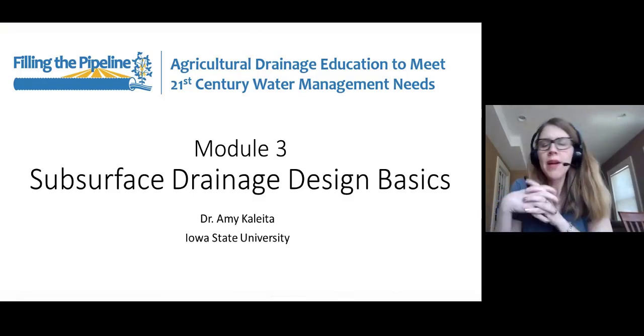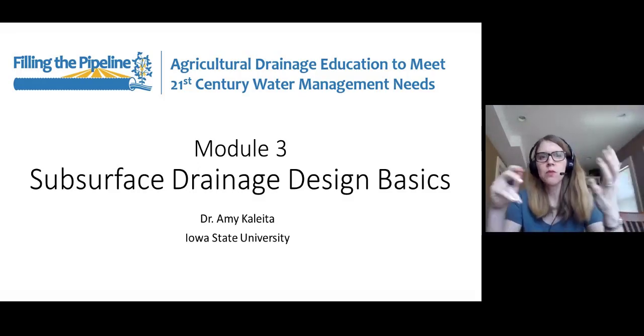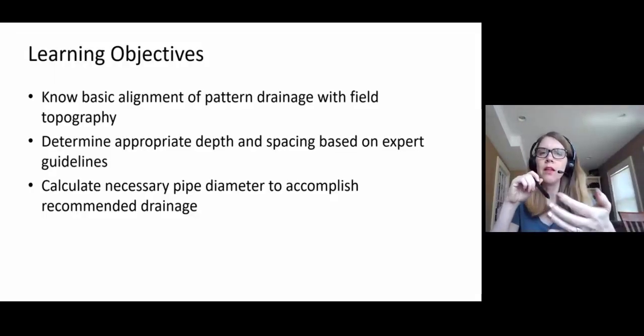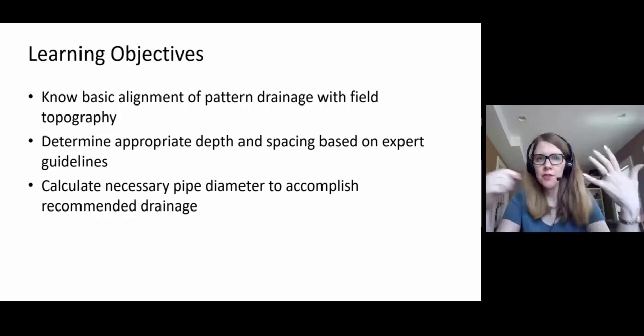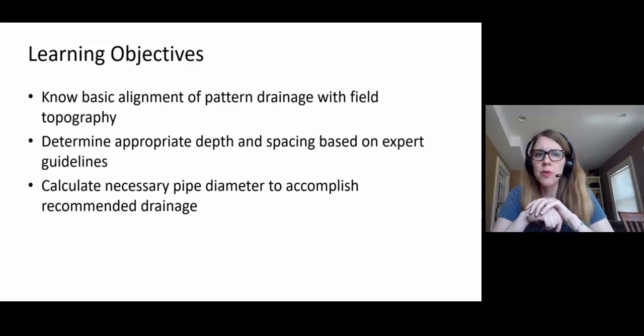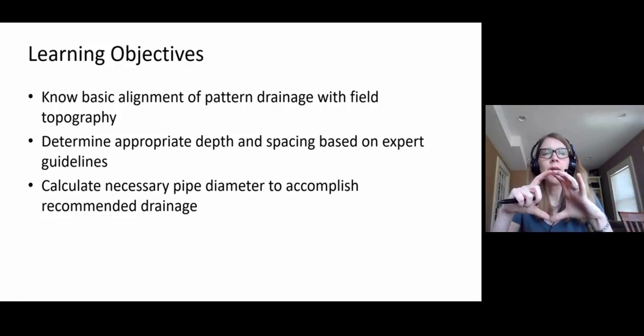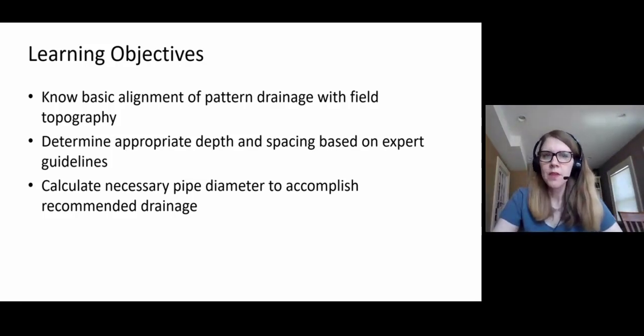All righty. Today we're following up on our conversation about drainage by getting down into some of the nuts and bolts. We're going to talk about how do we align drainage tile in a field, particularly pattern drainage, how do we use field topography to get the best performance of that system, how do we determine appropriate depth and spacing, and then finally how do we calculate the necessary pipe diameter for laterals and for mains in order to accomplish the recommended amount of drainage in our situation.